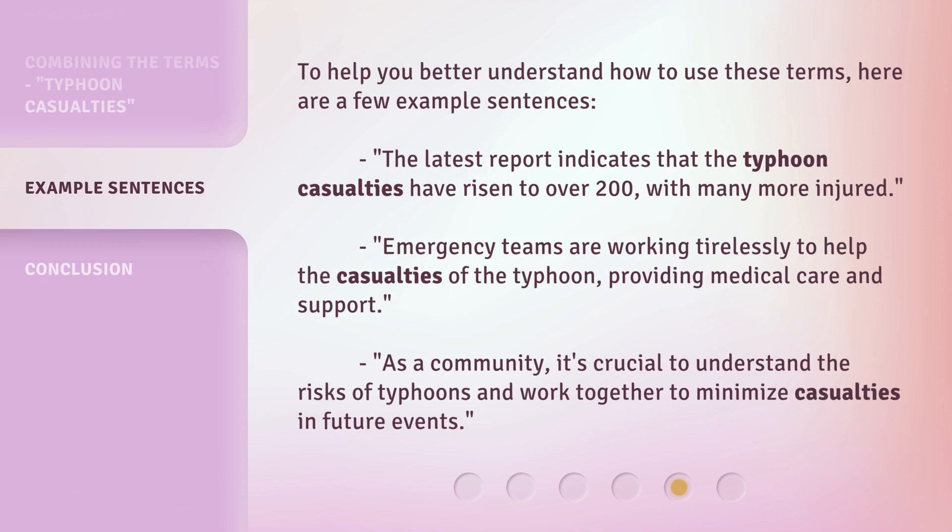To help you better understand how to use these terms, here are a few example sentences. The latest report indicates that the typhoon casualties have risen to over 200, with many more injured. Emergency teams are working tirelessly to help the casualties of the typhoon, providing medical care and support. As a community, it's crucial to understand the risks of typhoons and work together to minimize casualties in future events.